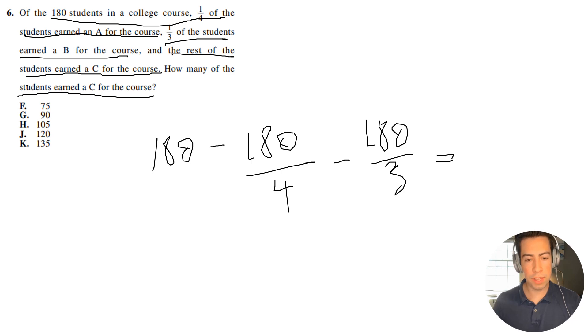This entire thing is going to equal C, the students that earned a C in the course. I'm going to give myself a common denominator—actually hang on, I'm not going to do that. 180 divided by 4 is going to be 45.